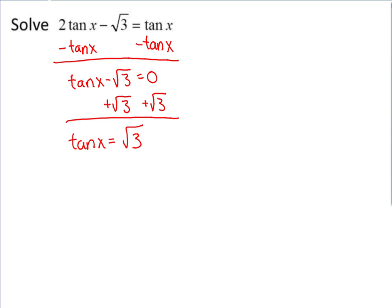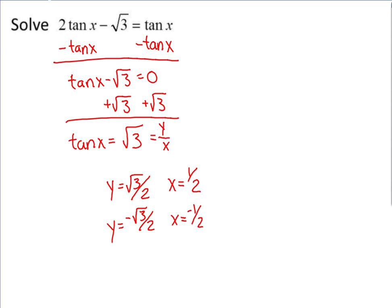Now you're going to need your unit circle. Remember, tangent equals the y-value over the x-value. Look at your unit circle and find values of y and x so that y over x simplifies to radical 3. The y-value could be radical 3 over 2 and the x-value could be 1/2, or the y-value could be negative radical 3 over 2 and the x-value could be negative 1/2 — the negatives cancel to give a positive. Checking: radical 3 over 2 divided by 1/2 means multiplying by the reciprocal, which gives radical 3. So these are the coordinates we need.